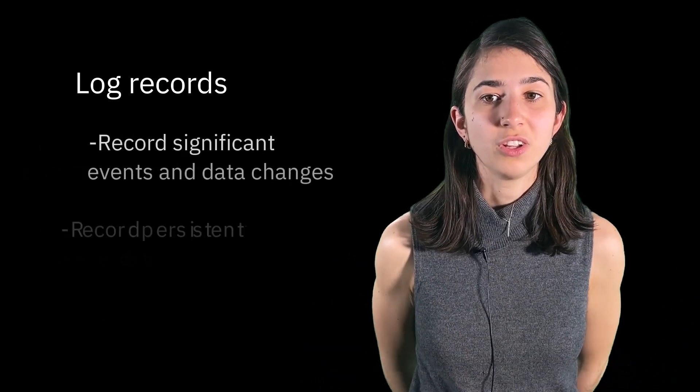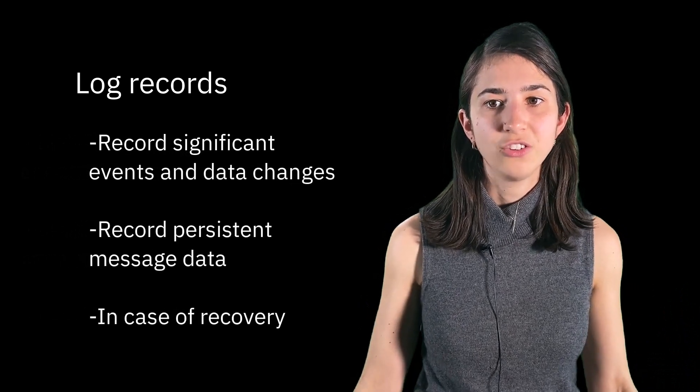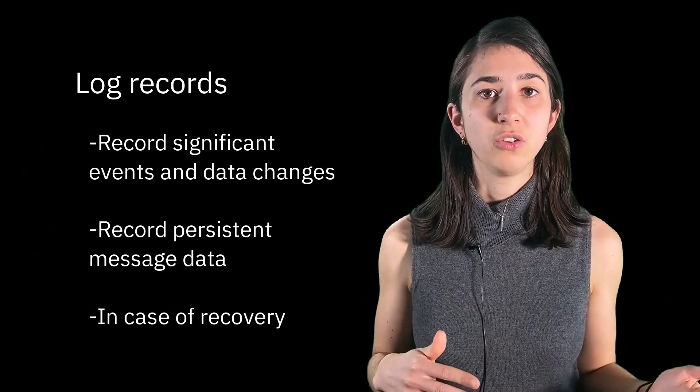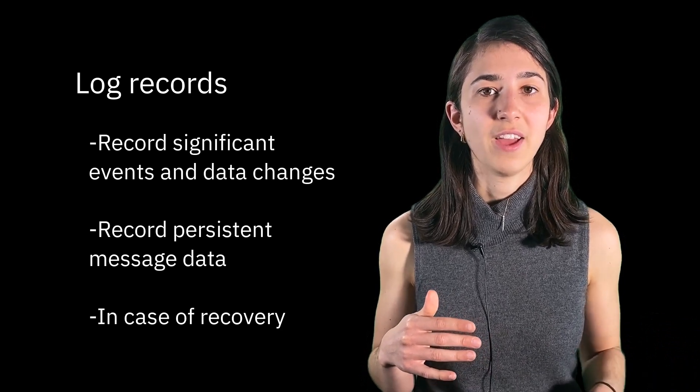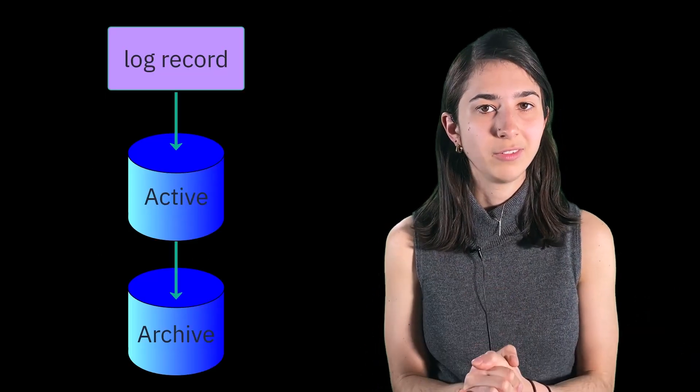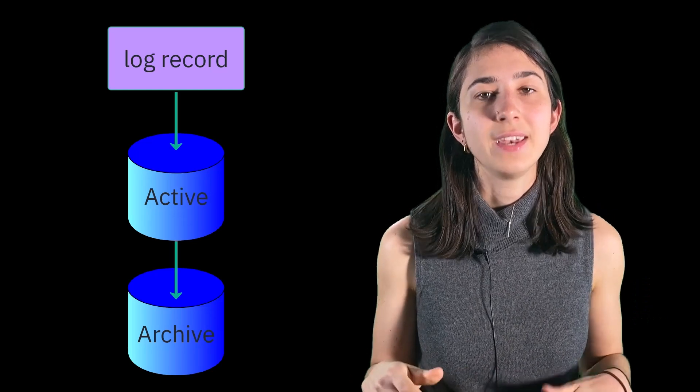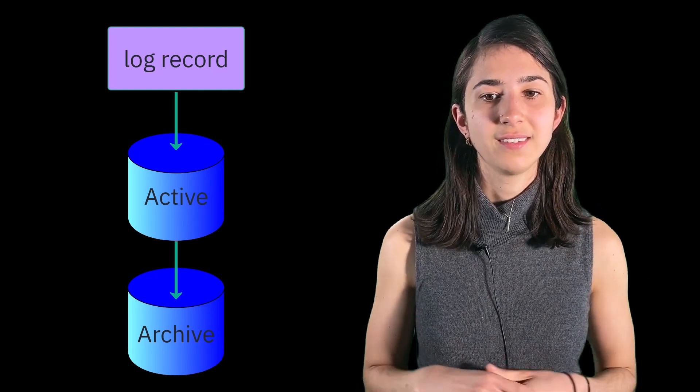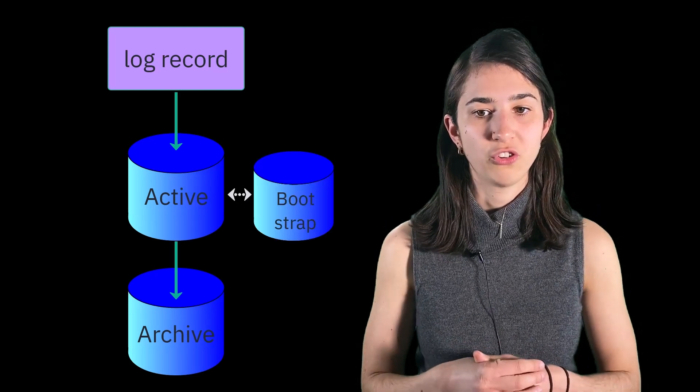Log records record any changes to objects that are held on page sets and operations for persistent messages in the event of any lost message data. These log records are then written to a log data set called the active log data set. The name and size of the active log data set will be held in the bootstrap data set.